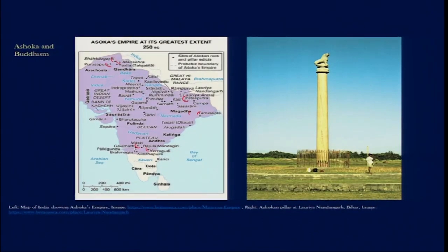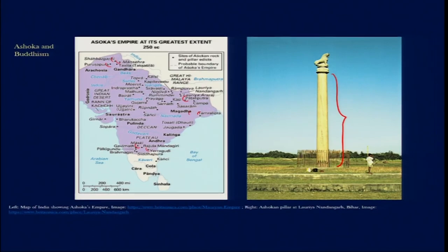Looking at one of these pillars on the right side of our screen, we find the pillars are vertical, symmetrical, and cylindrical — slightly tapered. The entire shaft is made from one piece of stone, and on the top of that there is a capital. The capital has an abacus with an inverted lotus, then a circular base, and on top of that we usually see animal motifs.